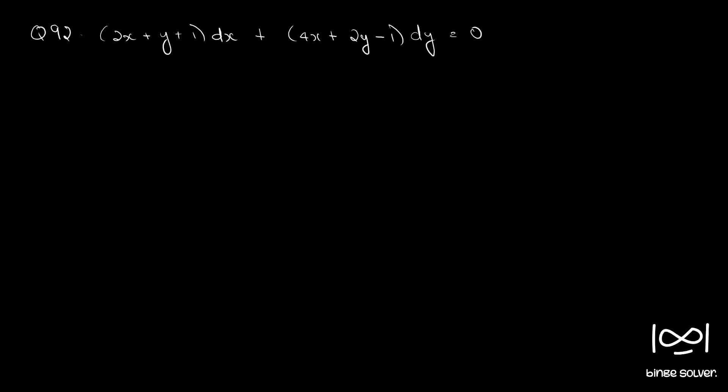Question number 92: (2x + y + 1)dx + (4x + 2y - 1)dy = 0.